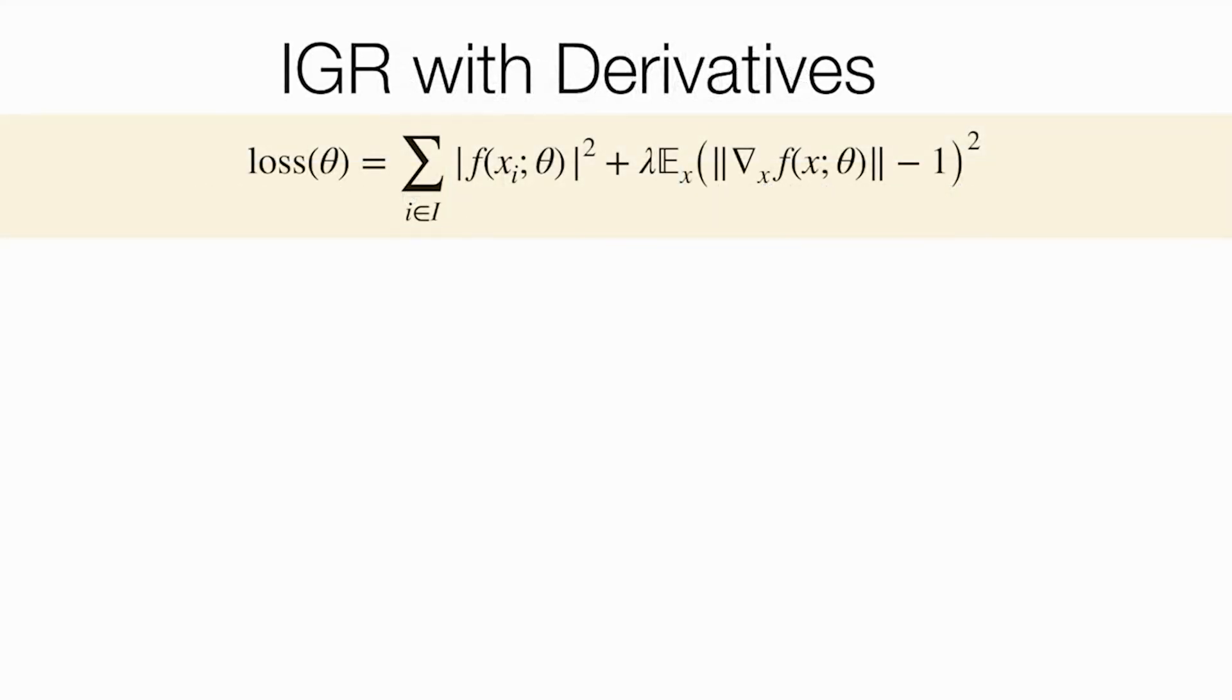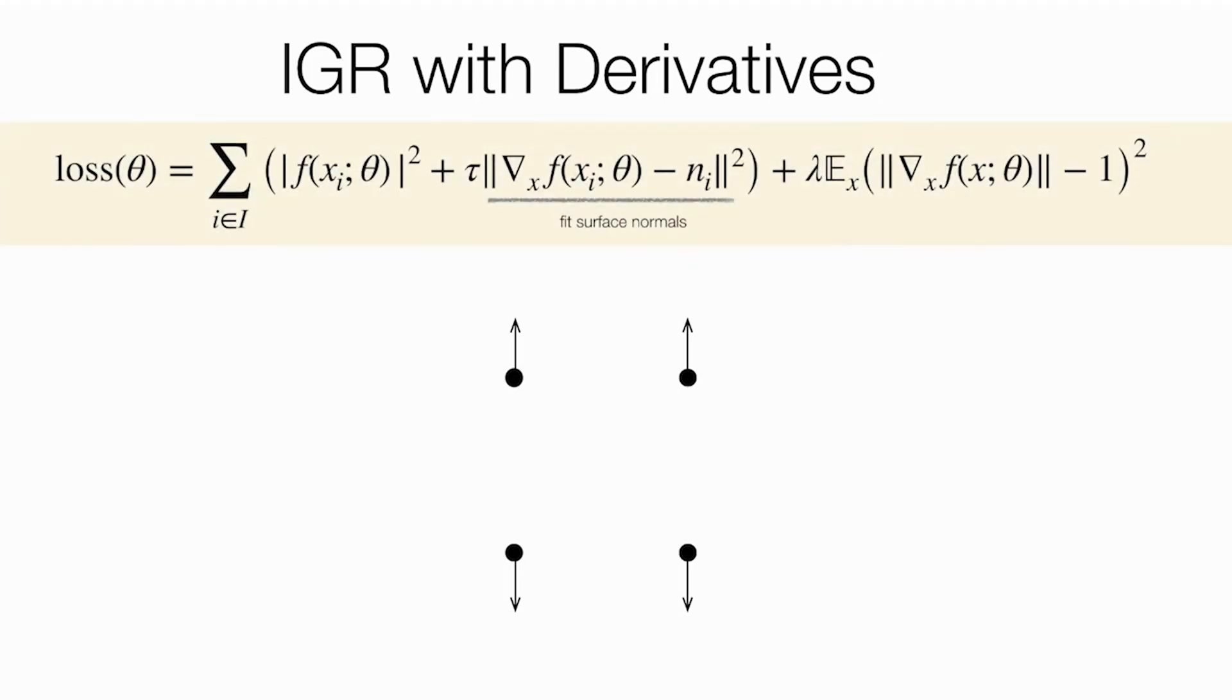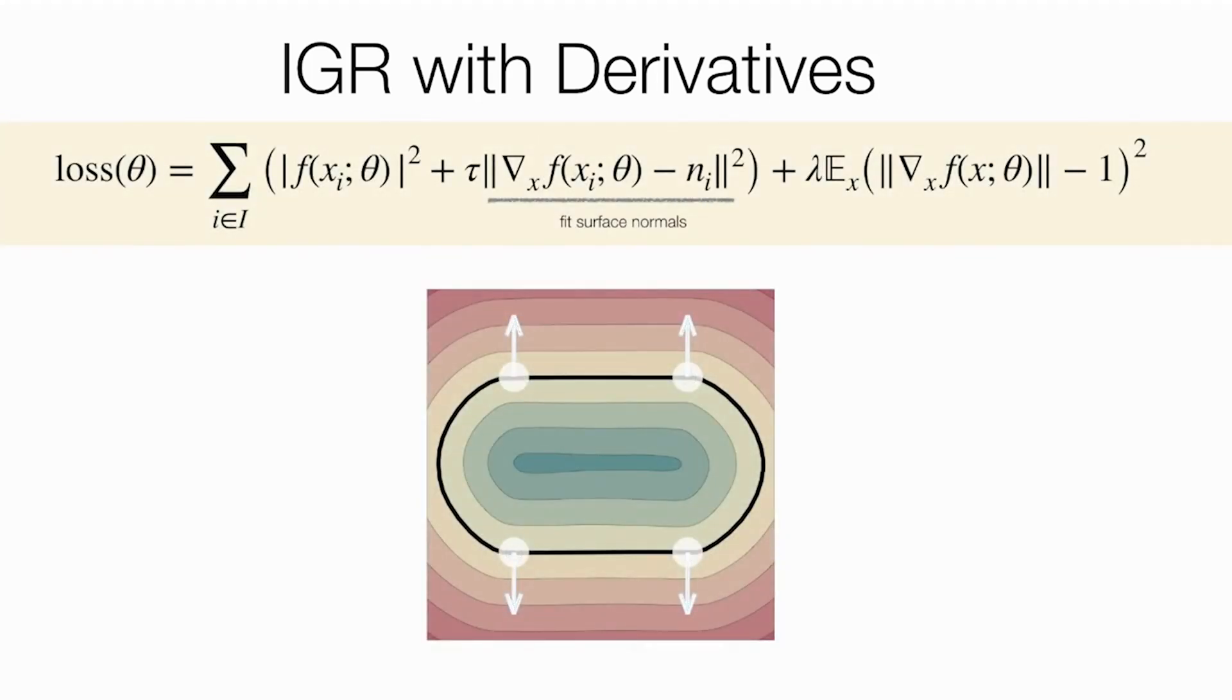So far, we saw raw point clouds as inputs where the suggested loss was inspired by the Eikonal equation. However, sometimes we are provided with additional data, such as oriented normals at the points. This can be easily plugged into the IGR loss by adding a normal reconstruction term.